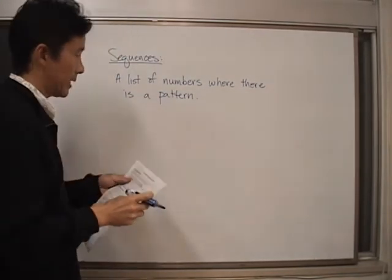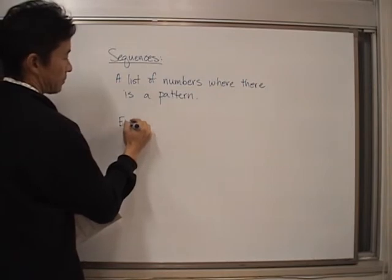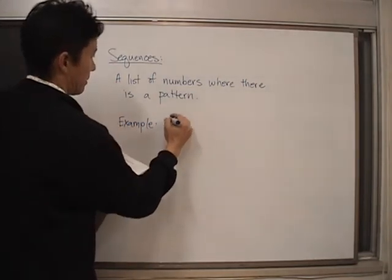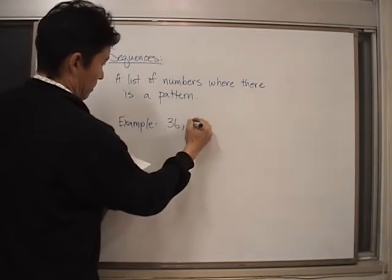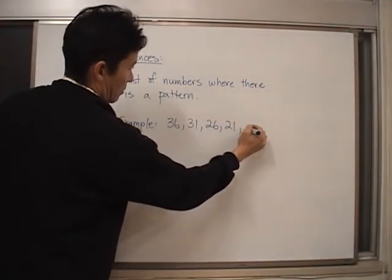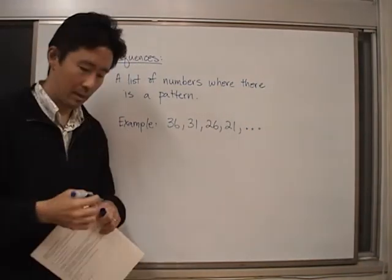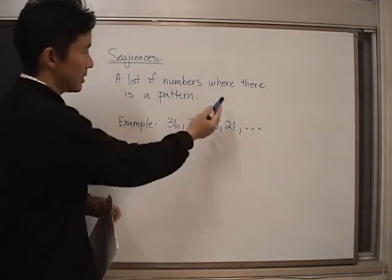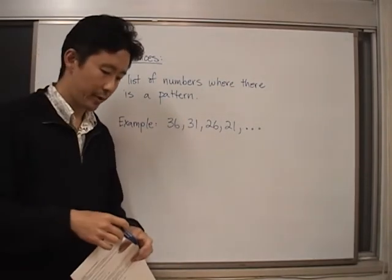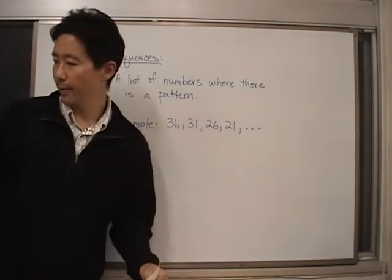If you want to go ahead and take a look at an example of a sequence, here's an example. Notice that it is a list of numbers where there's a pattern, and I'm not exactly sure if you can see the pattern at this point, but there is definitely a pattern there.